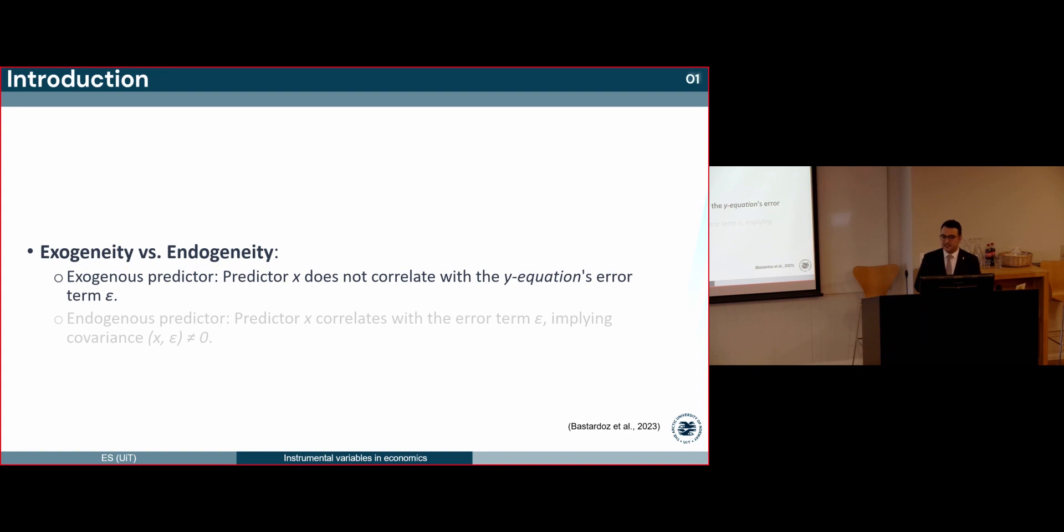Exogeneity versus endogeneity. There are two critical distinctions for the X variable: either X is exogenous or endogenous. When we say a predictor X is exogenous, we mean that it doesn't have any correlation with Y equation's error term, epsilon. Think of it as the ideal scenario where the predictor stands alone without any inference from our error term. However, things get complicated when X does correlate with epsilon. In this case, we label X as endogenous. This means our estimated coefficient for X won't be true to the real effect. It becomes both biased and inconsistent.